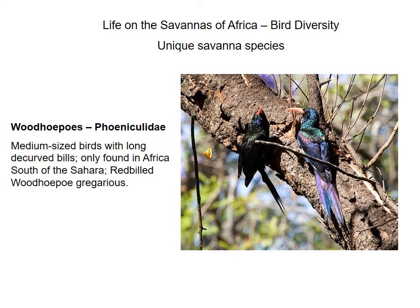Wood hoopoes are another classic savannah species, only found in Africa south of the Sahara, also called red-billed or green wood hoopoes. They are gregarious, living in groups, and have long red decurved bills which they use to flick off pieces of bark to find insects and grubs underneath. They have a characteristic call that sounds like a group of laughing women.